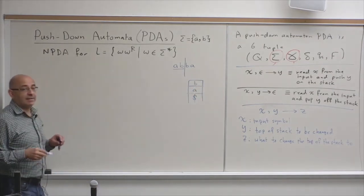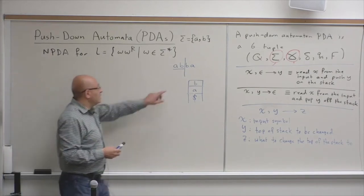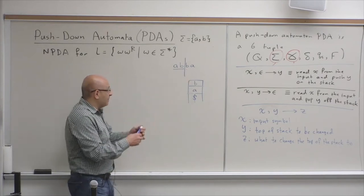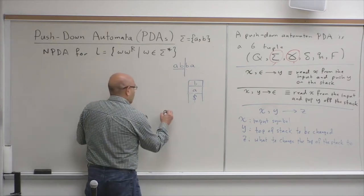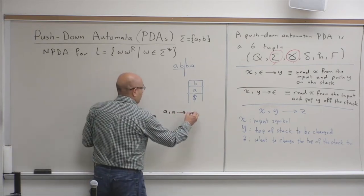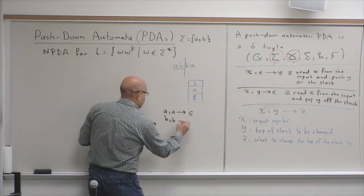Then, when we pop, it should be the same. It should match. What we pop should match what we are seeing at the input. So, we will have lots of transitions where A, A goes into epsilon and B, B goes into epsilon.